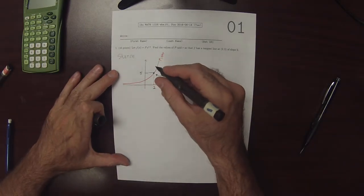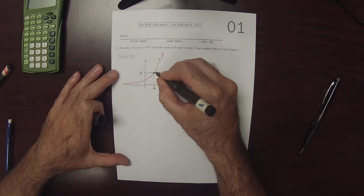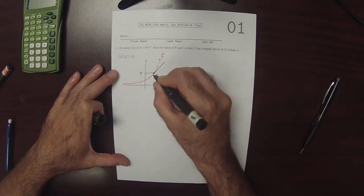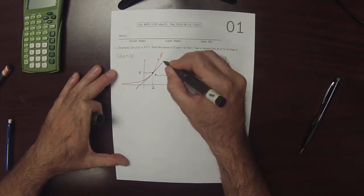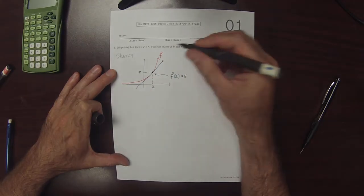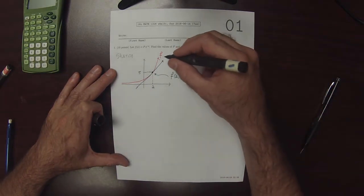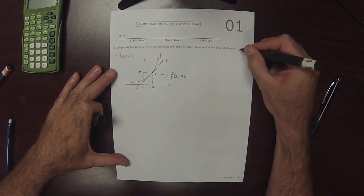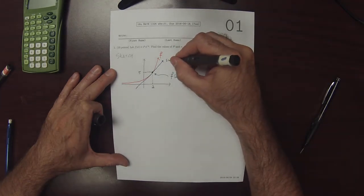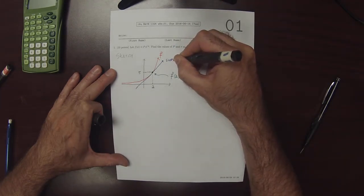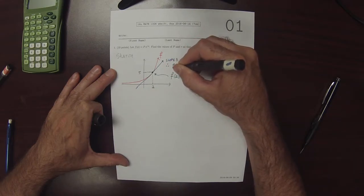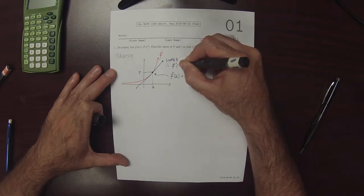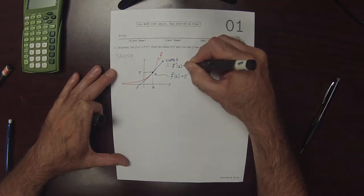So that statement right there is saying that f of 2 is 5. Furthermore, we know that there's a tangent line there. And this tangent line has slope, no, slope 3. Therefore, we know that the derivative evaluated at 2 is 3.